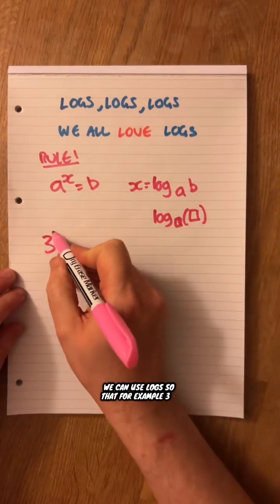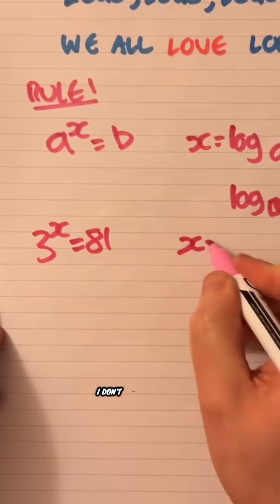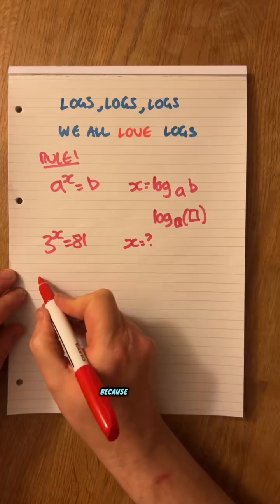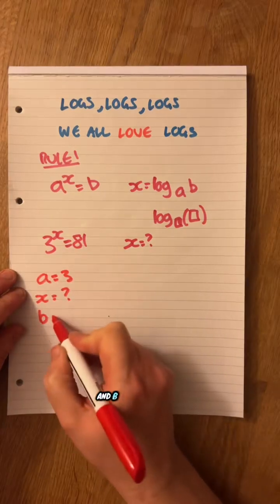So let's for example, 3^X equals 81. I don't know what X is, but I can use this law because A is going to be 3, X I don't know, and B is going to be 81.